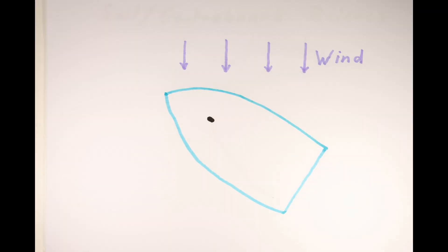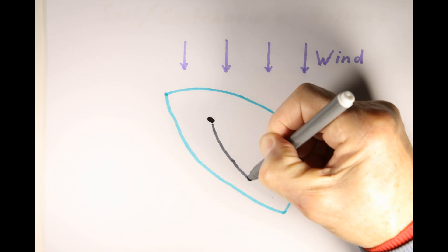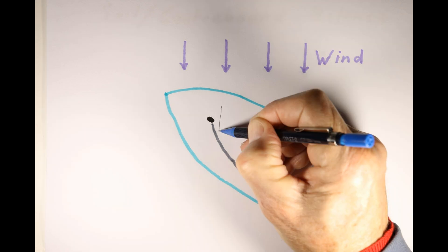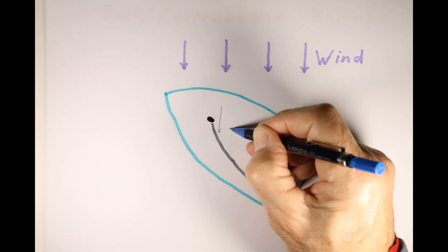The wind hits the sail at the front luff, the rear leech and all the way in between. We will look at how the wind moves around the sail in another video.